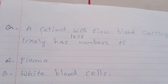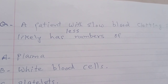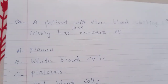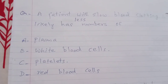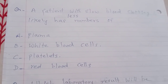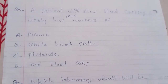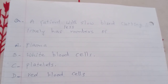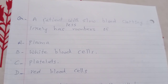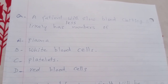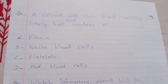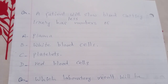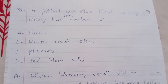A patient with slow blood clotting likely has fewer numbers of: A. Plasma. B. White blood cells. C. Platelets. D. Red blood cells. The answer is C: platelets.